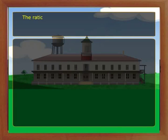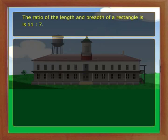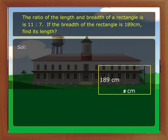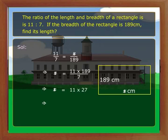The ratio of the length and breadth of a rectangle is 11 is to 7. If the breadth is 189 centimeters, find its length. According to the question, 11 by 7 equals x by 189, so x equals 11 into 189 by 7, which equals 11 into 27, giving 297 centimeters.